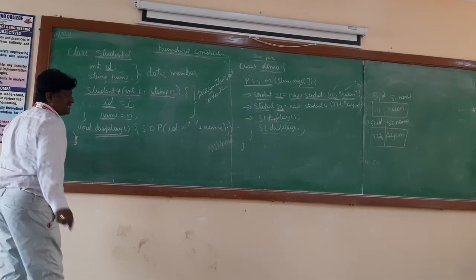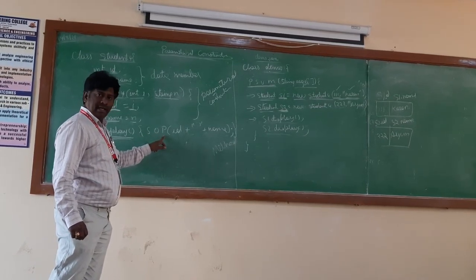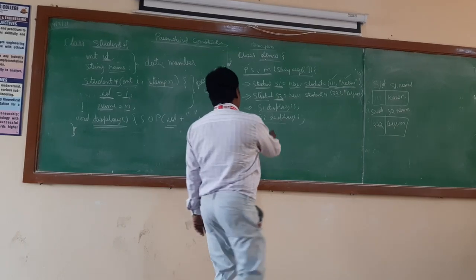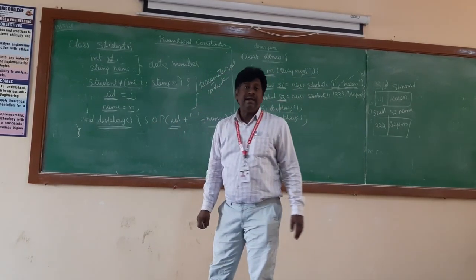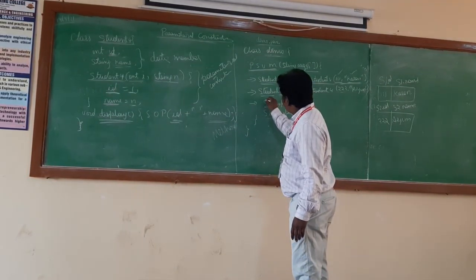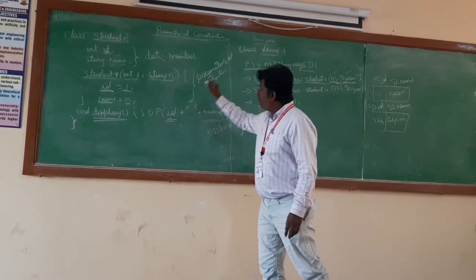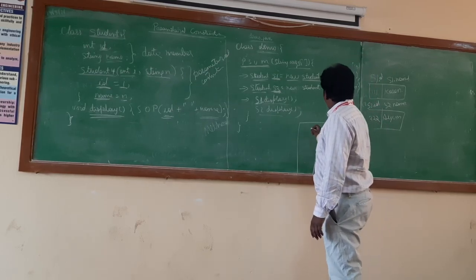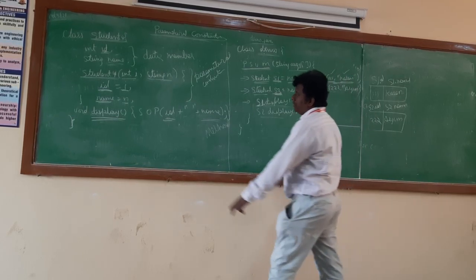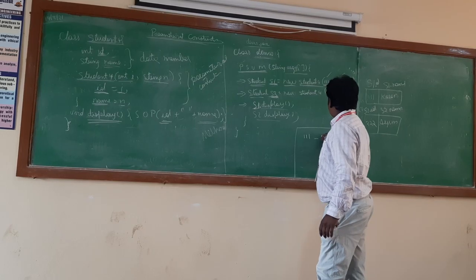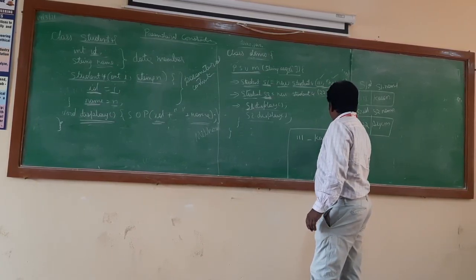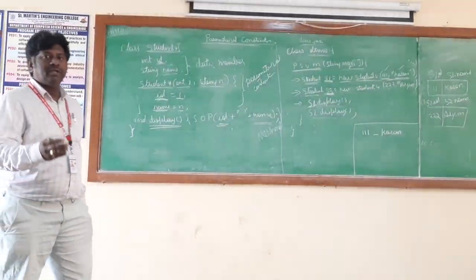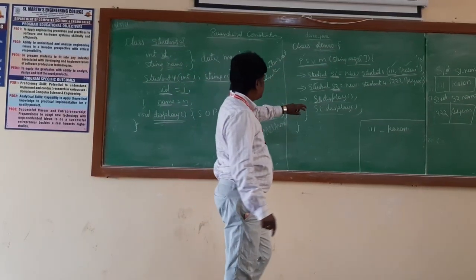Next, I want to verify this by calling S1.display(). This display method is written inside the class. Inside display, there is System.out.println to print the id and name. Since we are calling this function with S1, S1.id will be printed — that is 111 — followed by a space and then S1.name, which is Kiran.